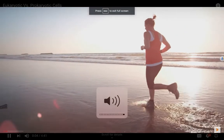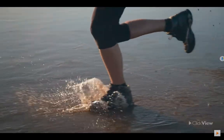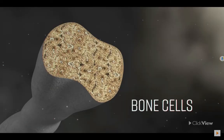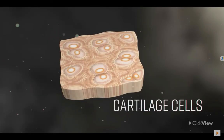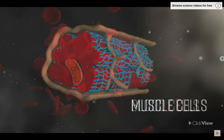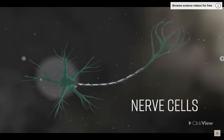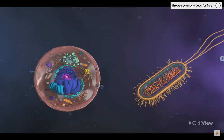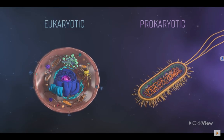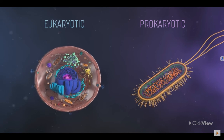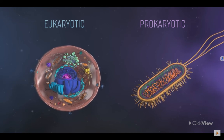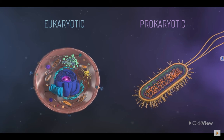All living things are made up of cells. There are many different types of cells in our bodies, including bone cells, cartilage cells, blood cells, muscle cells, and nerve cells. The broadest classification of cells is into two groups: eukaryotic and prokaryotic. There are a number of differences between these two types of cells.